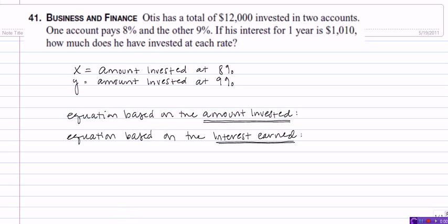This problem reads: Otis has a total of $12,000 invested in two accounts. One account pays 8% and the other 9%. If his interest for one year is $1,010, how much does he have invested at each rate?